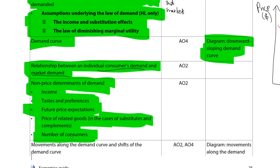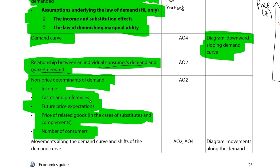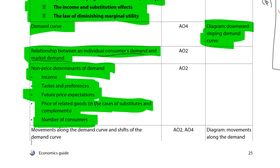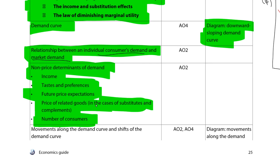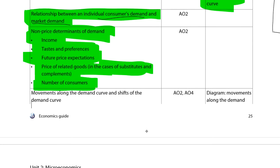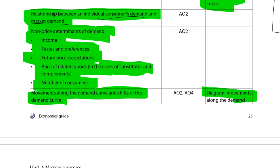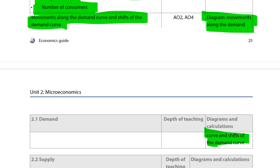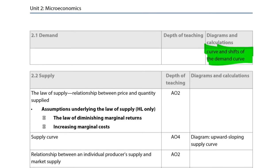I've intentionally not mentioned all the directions each factor shifts the demand curve — I want you to think about it yourself and determine which way each factor would shift demand. Movements along the demand curve versus shifts of the demand curve correspond to changes in quantity demanded versus changes in demand.